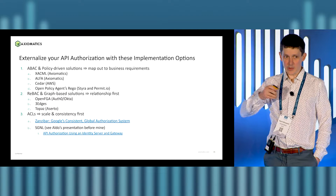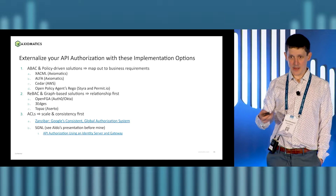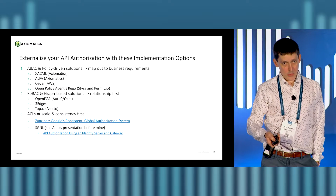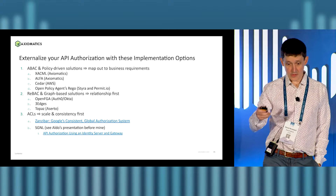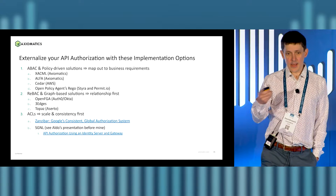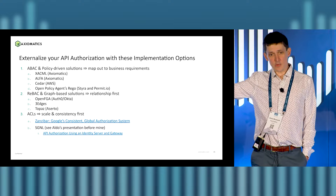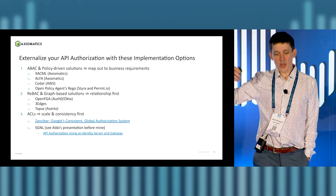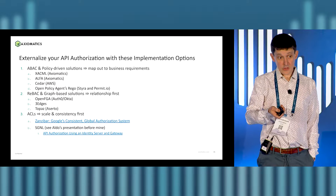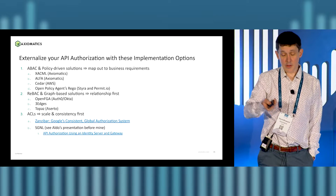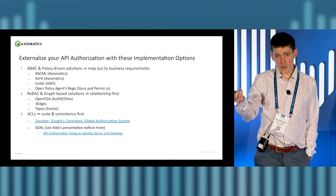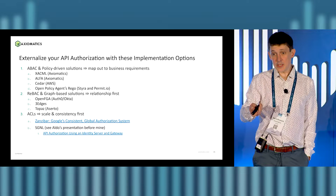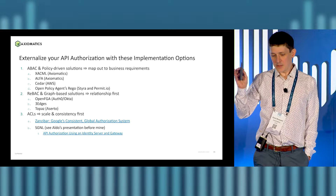When you decide to externalize your authorization, here are the different options. The first one I'm biased towards is ABAC and policy-driven authorization. You'll find standards like XACML — it's been around since 2001 — and Alpha, which is what we do at Axiomatics. Cedar came out last year by AWS, another way of doing policies. You have Open Policy Agent, which has been around since 2015.